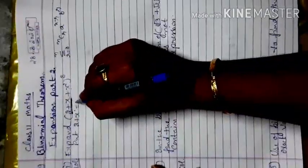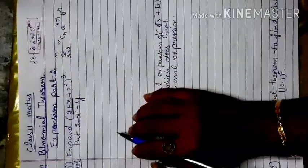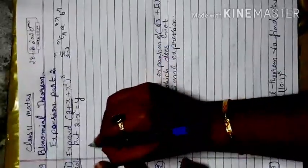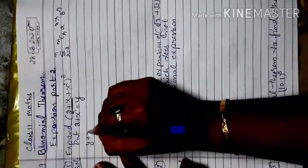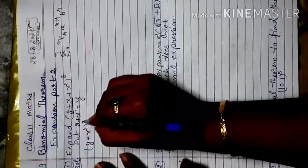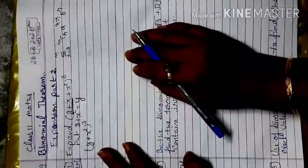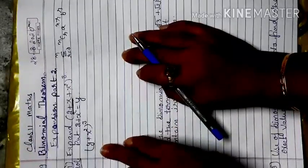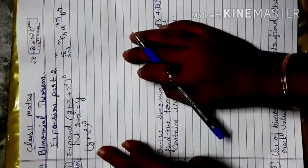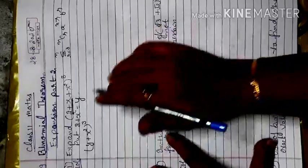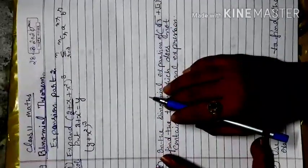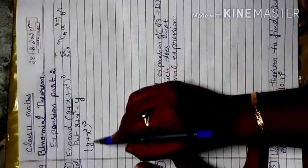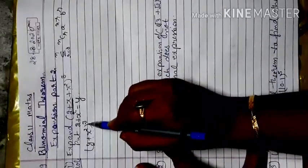Here we have 2 + x + x². We consider putting 2 + x equal to y, so the trinomial term converts into the binomial form: (y + x²) raised to power 3. Now you solve according to the cube of the binomial term, and when you get the answer, replace y back into the form 2 + x.